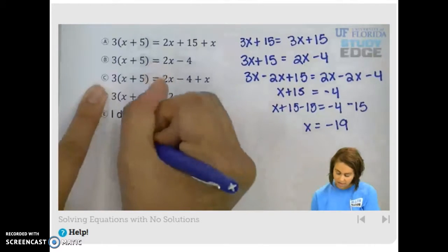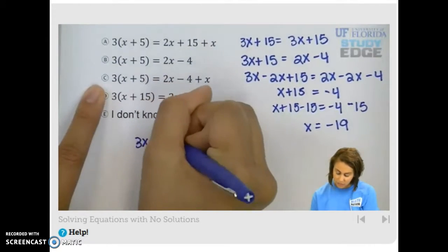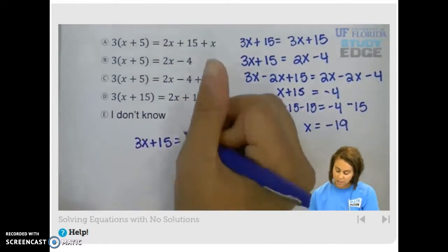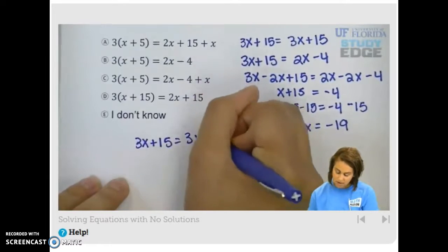Next one. Again, we have 3x plus 15 when we distribute, and on the right hand side we can combine like terms to get 3x minus 4.